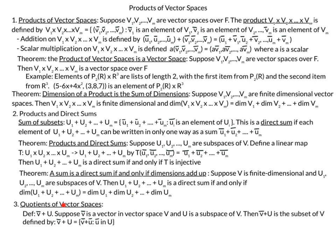Our last topic in the overview will be a quick introduction to quotients of vector spaces, the main topic of our next video. We define a vector plus a subspace: suppose V is a vector in the vector space V and U is a subspace of V. Then V plus U is the subset of V defined by V plus u, where u is a vector in the subspace U. That wraps up our overview; we're ready to take a closer look at each topic.